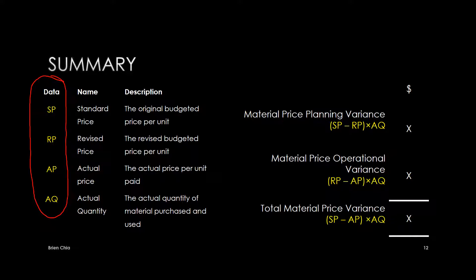In summary, we are looking for four different types of data: standard price, revised price, actual price, and actual quantity. The format has three different levels: material price planning variance, material price operational variance, and the total material price variance. Thank you very much for watching.